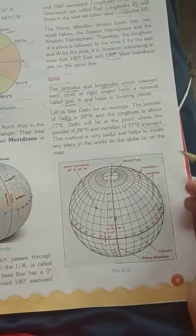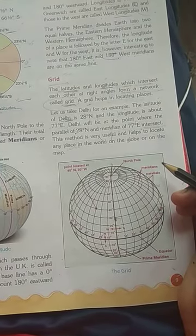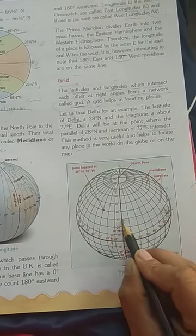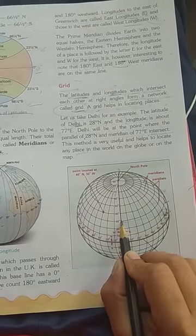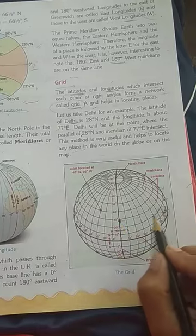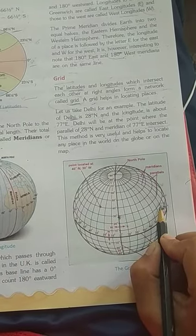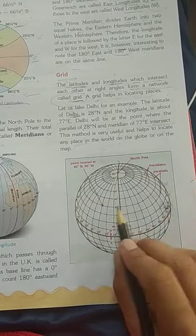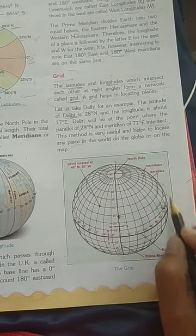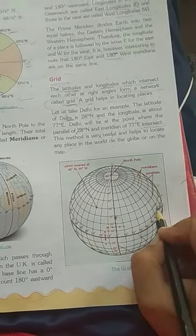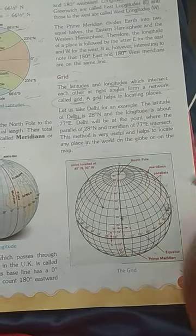we will go to 28 degrees north latitude and 77 degrees east longitude, where the parallel of 28 degrees north and the meridian of 77 degrees east intersect. Here is where Delhi is located.